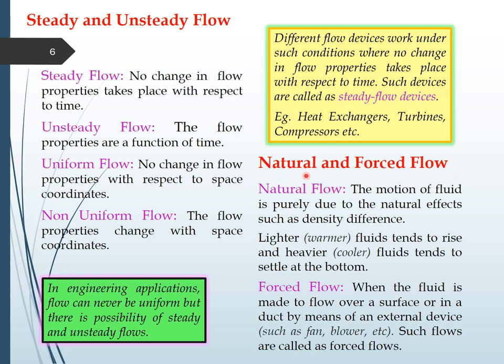The next classification is natural and forced flows. Natural flow is driven purely by natural effects such as density differences — warmer gases rise while cooler gases settle, due to density difference. In forced flow, fluid is made to flow over an external surface by means of a duct or external device such as a fan or blower which creates an external effect.